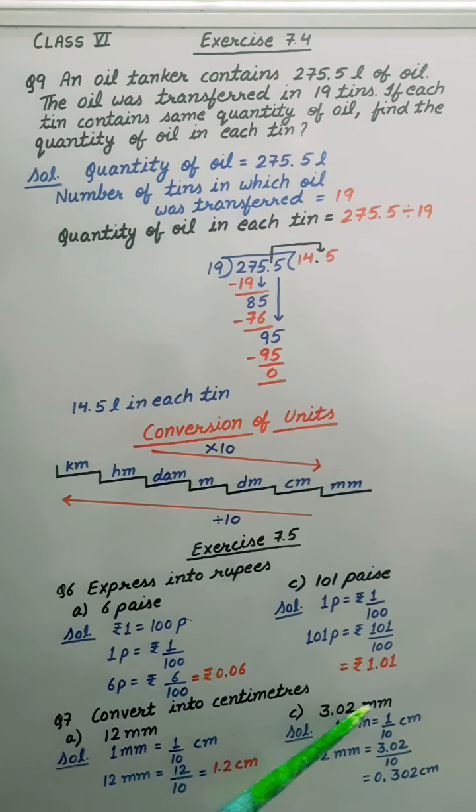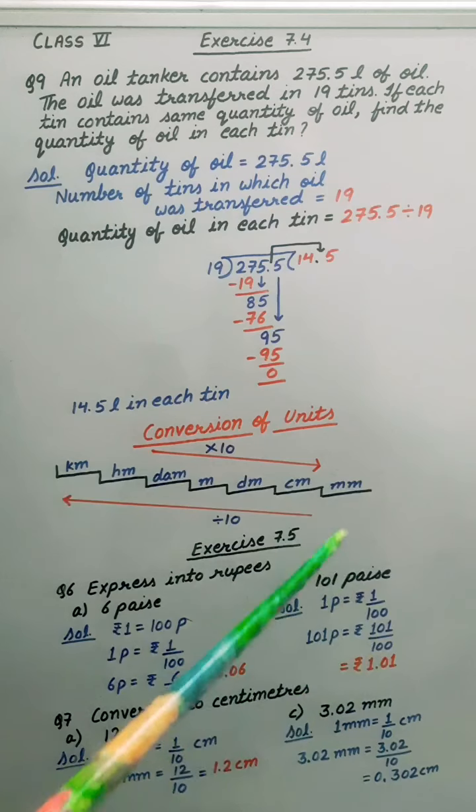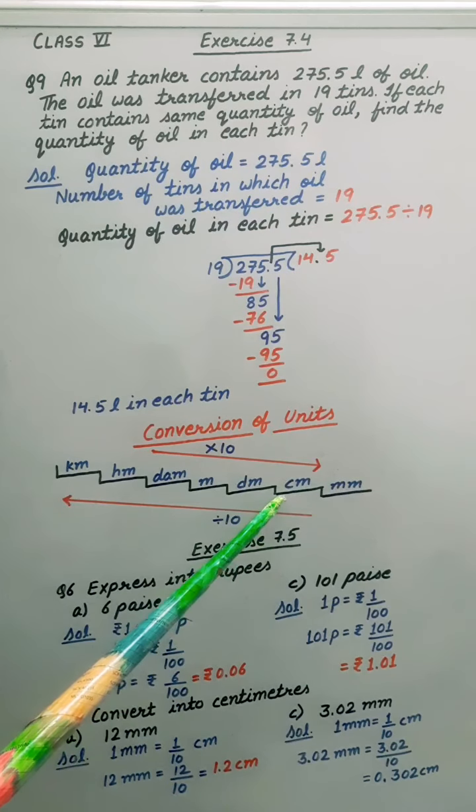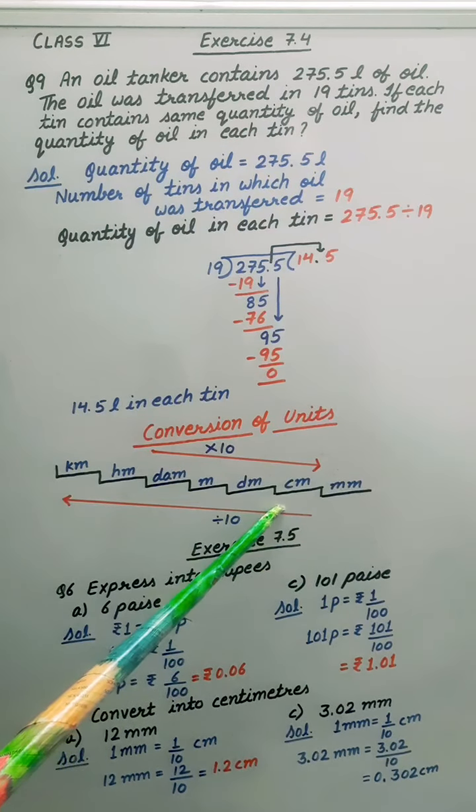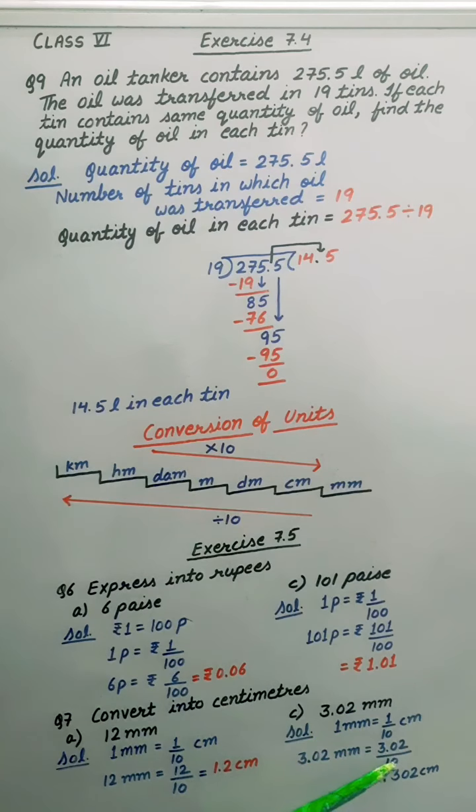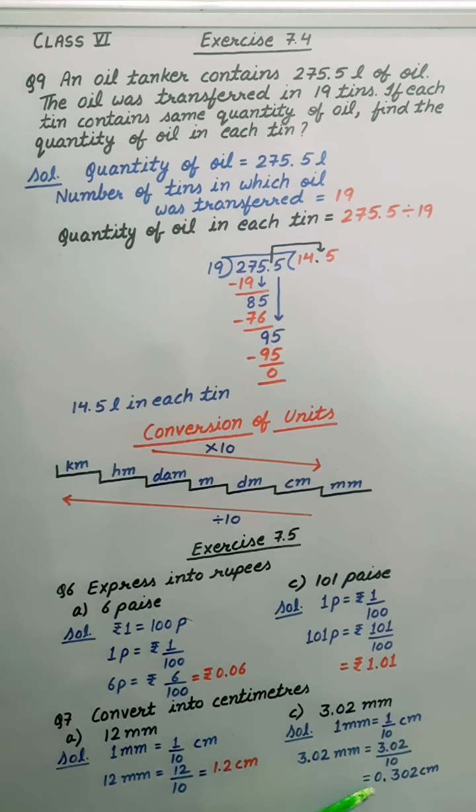Similarly, 3.02 millimeter. Again, millimeter when we convert into centimeter, we will divide by 10. So dividing by 10, shifting this decimal to the left side. Result is 0.302 centimeter.